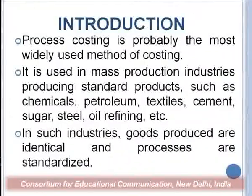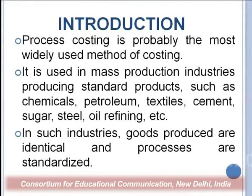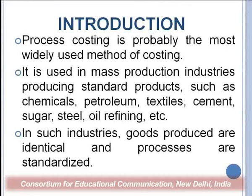Process costing is one of the most widely used methods of costing. It is used in mass production industries producing standardized products where the flow of production is of continuous nature. These types of industries include, for example, chemical industry, petroleum industry, textile industry, cement industry, sugar industry, steel, oil refining, etc.